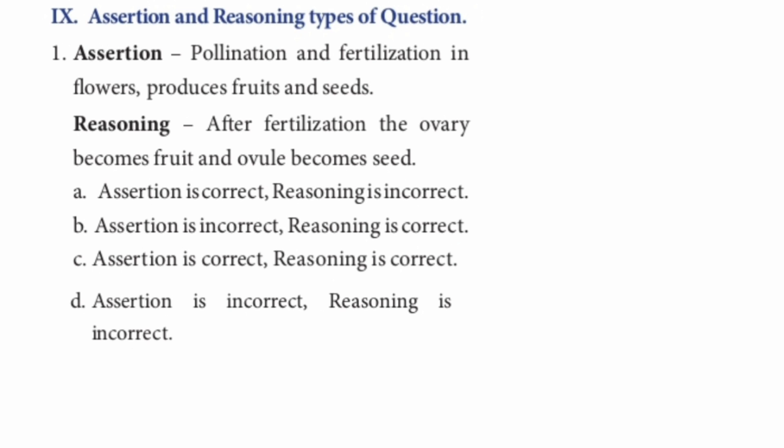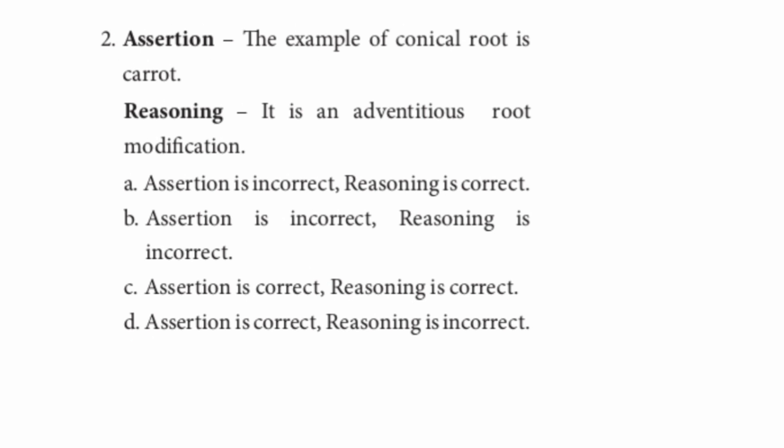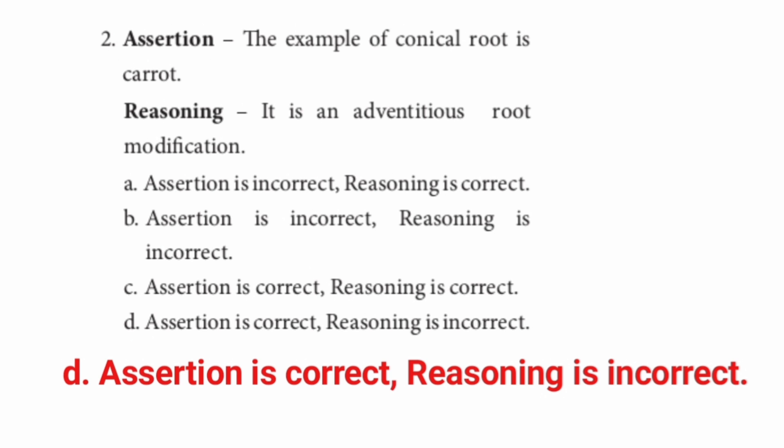Roman numeral IX: Assertion and reasoning type questions. Question 1: Assertion — pollination and fertilization in flowers produces fruits and seeds. Reasoning — after fertilization, the ovary becomes fruit and ovule becomes seed. Both are correct. Answer: C. Question 2: Assertion — the example of conical root is carrot. Reasoning — it is an advantageous root modification. Answer: D. Assertion is correct, reasoning is incorrect, because in carrot it is a taproot modification.